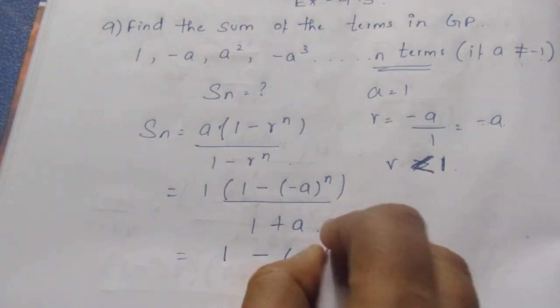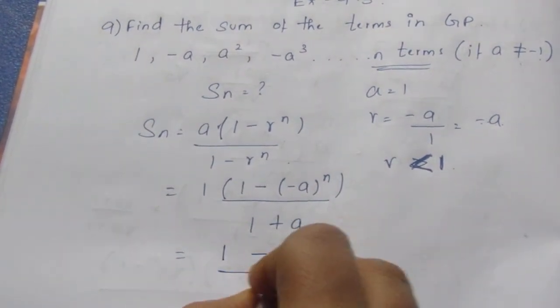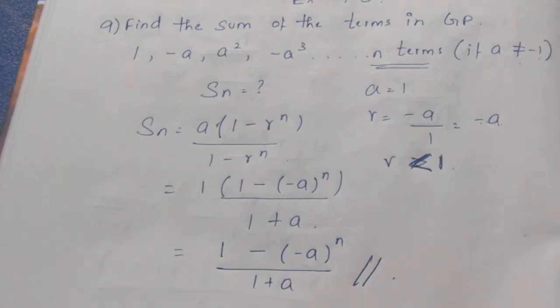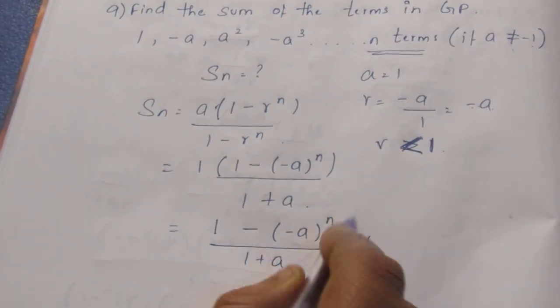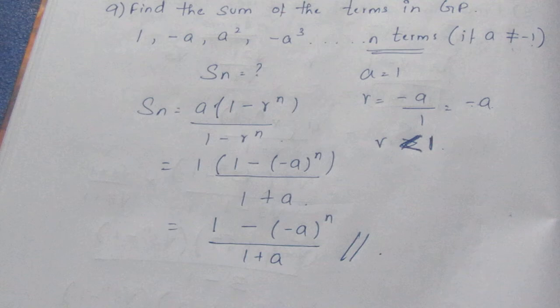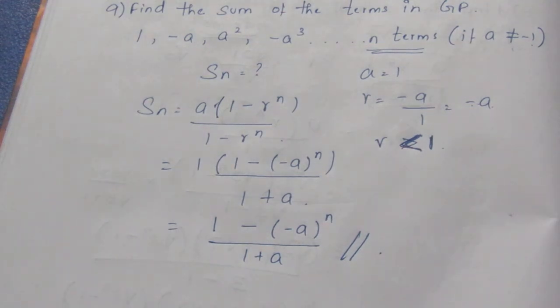So [1 - (-a)ⁿ]/(1 + a) is your final answer. We can't solve it further. We don't know the power n value. Only then we can say if it is plus or minus. As we don't know whether it is an even power or odd power, we can leave the answer as it is. That's all, thank you.